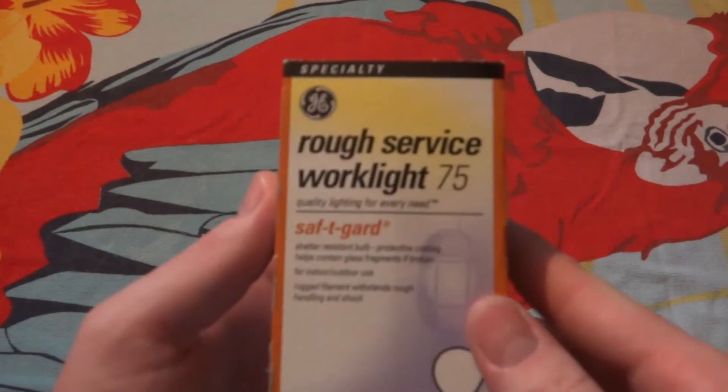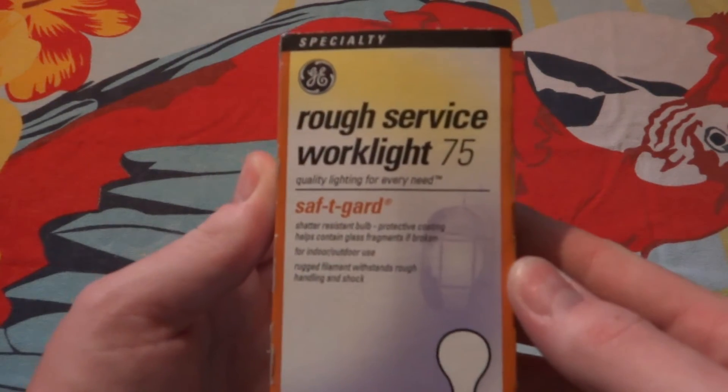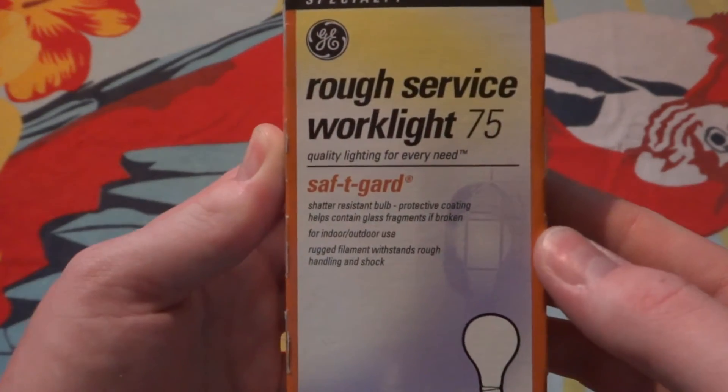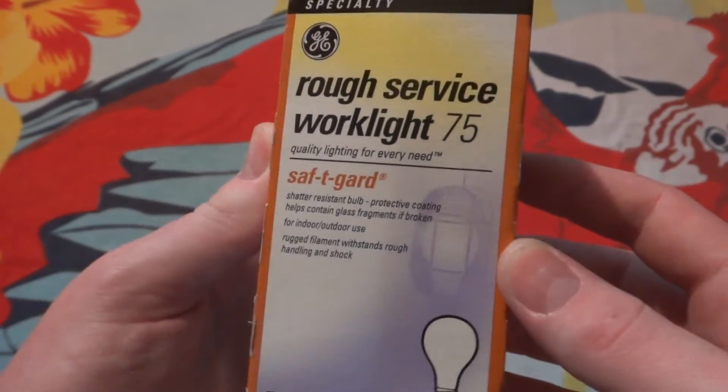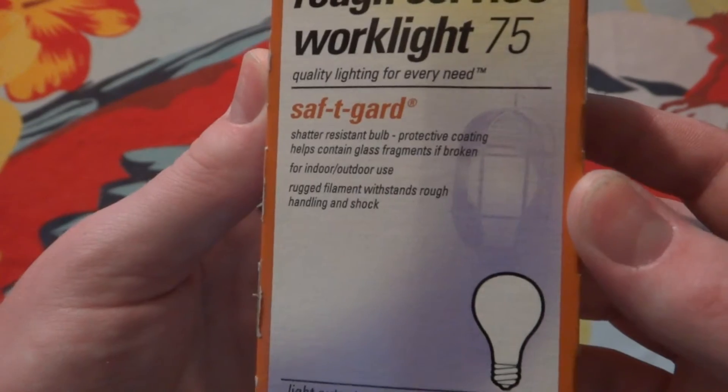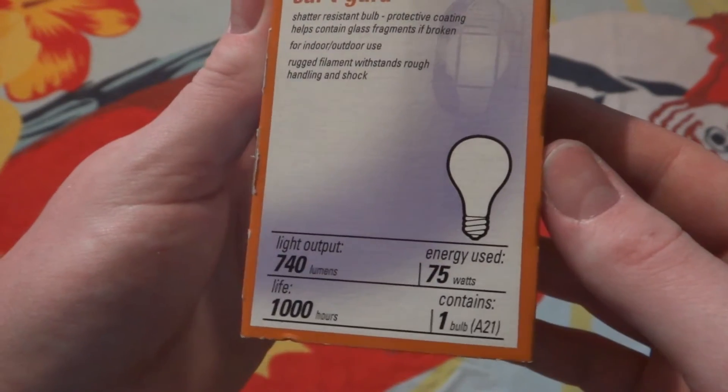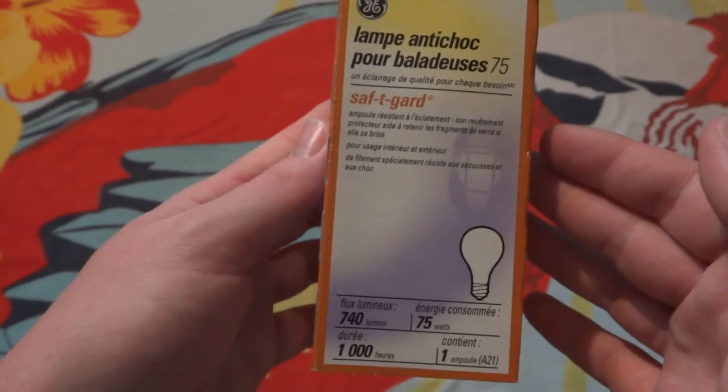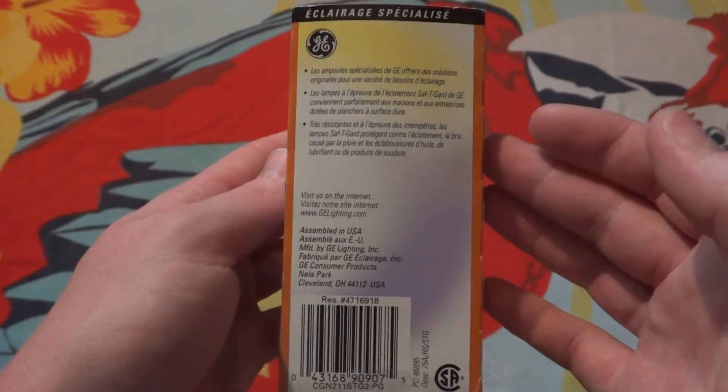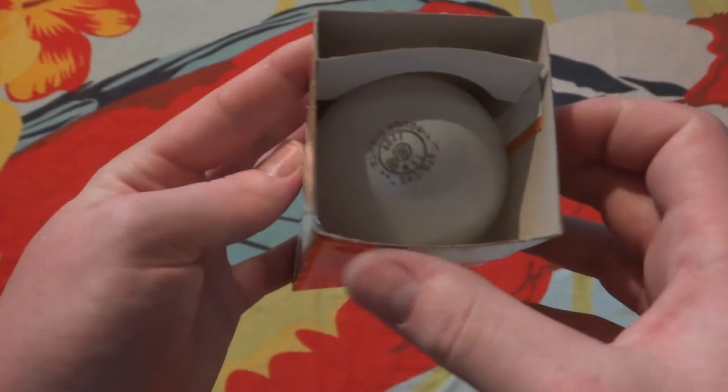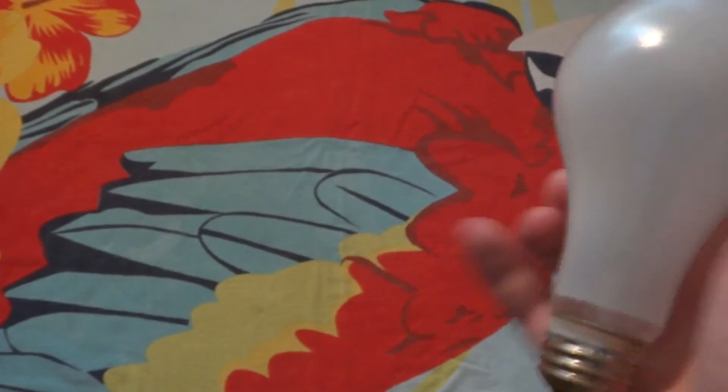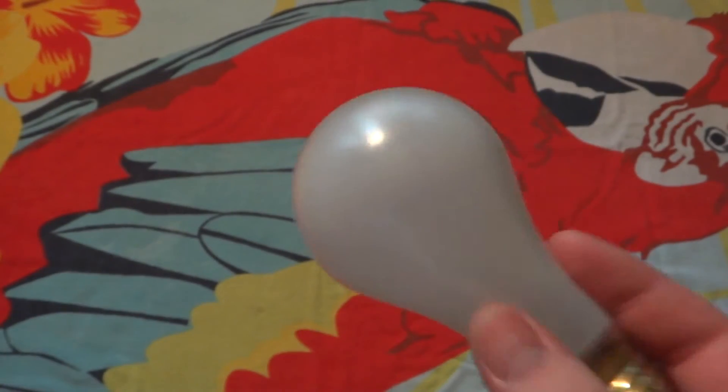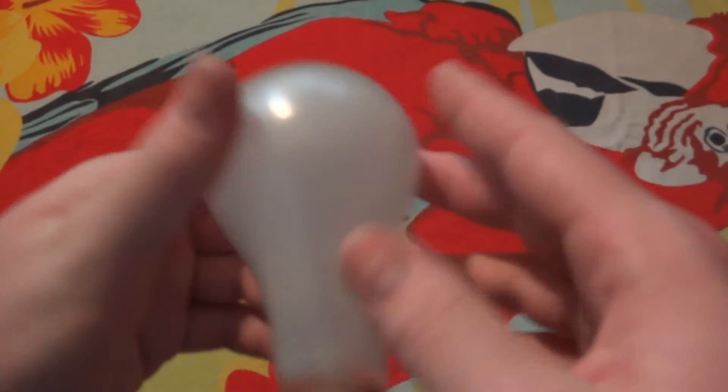Hello everybody, today I'm going to show you this GE rough service 75 watt work light bulb. It has a safety guard on it, which is the rubberized coating. Here's the front of the package - indoor outdoor use, lasts 1000 hours, assembled in the USA. It's not really rubberized coating, but that's kind of what it is.